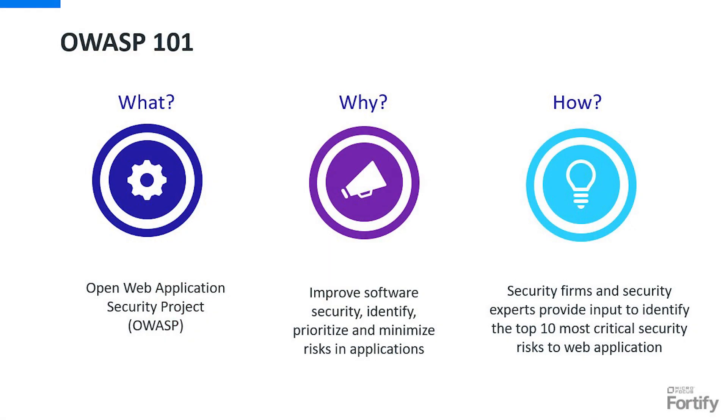I've been working in data security for about four years now and I've heard OWASP and the OWASP Top 10 mentioned all the time — at shows, in emails, in white papers. Why do we hear this term so often? In security, we talk about it a lot because we use it to help identify the top critical risks, and then we use it to help prioritize and minimize the risks for our applications.